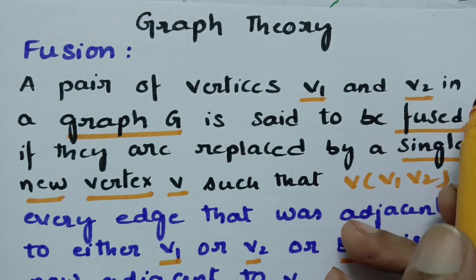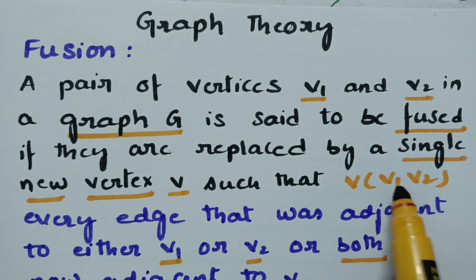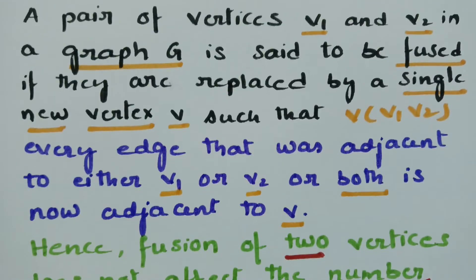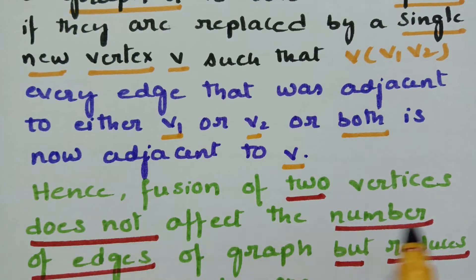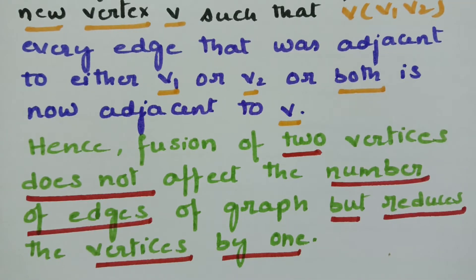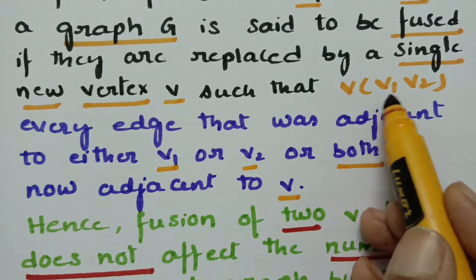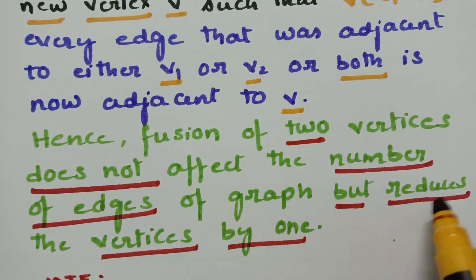A pair of vertices V1 and V2 in a graph G is said to be fused if they are replaced by a single new vertex V, where V represents the fused vertices V1 and V2. Every edge that was adjacent to either V1 or V2 or both is now adjacent to V. Hence the fusion of two vertices does not affect the number of edges. If there are four edges, after fusion there will still be four edges.